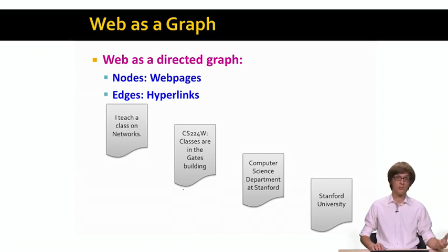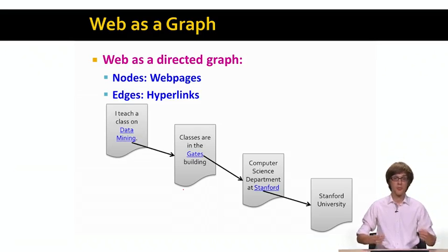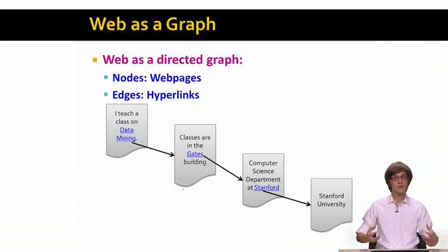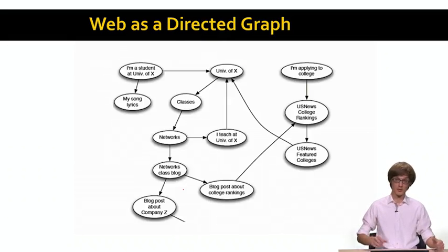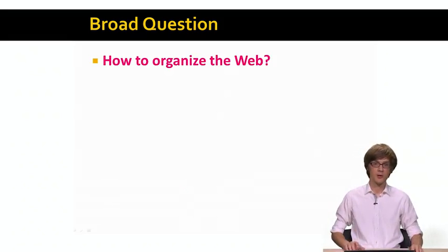In our graph, nodes will correspond to web pages, and we will have directed links between web pages that correspond to hyperlinks. So if I have a set of four web pages, these web pages contain hyperlinks where a particular page points to another page via a hyperlink. We can use these hyperlink relationships to create a network. Think of a university website as a giant graph of web pages citing or referring to each other via hyperlinks. Having represented the web as this network, the question is: how is the web organized?